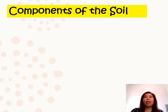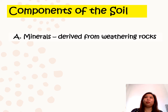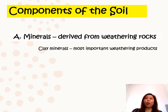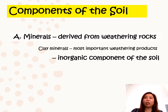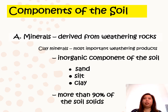Now let's take a deeper look at each soil component. First, the minerals or mineral matter. Minerals can be derived from the weathering of rocks, in which clay minerals are the most important weathering products. The minerals are the inorganic component of the soil comprising the sand, silt, and clay fractions. Minerals comprise more than 90% of the soil solids.